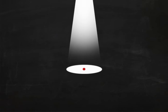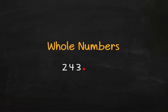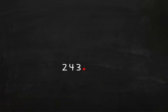How do you read a number that has a decimal point? Well, numbers that are bigger than one, to the left of the decimal point, are called whole numbers. Two hundred forty-three is a whole number.